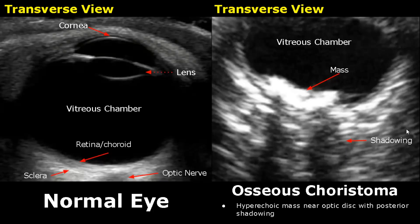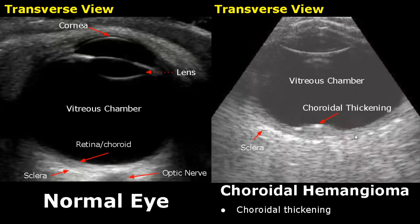Choroidal hemangioma has a non-specific appearance on ultrasound — we will see a thickened choroidal layer.